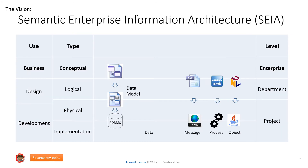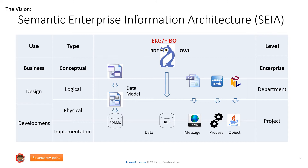The vision is semantic enterprise information architecture, SEIA. When we look at architecture models by use type and level, we have data models — logical, physical — deployed on RDBMS, and other models for message, process, and object in the enterprise. Newest, we have the enterprise knowledge graph, the FIBO and RDF-OWL, residing on RDF databases. And FIB-DM is the logical data model.